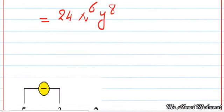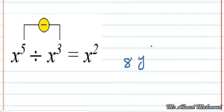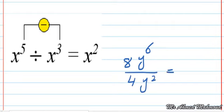Next, we are going to learn how to divide two terms. As we studied in the sixth primary, if we have x power 5 divided by x power 3, we subtract the powers: x power 5 minus 3 equals x power 2. For example, 8y to the power of 6 over 4y to the power of 2: 8 over 4 equals 2, and y power 6 over y power 2 — we subtract the powers to get y power of 4.